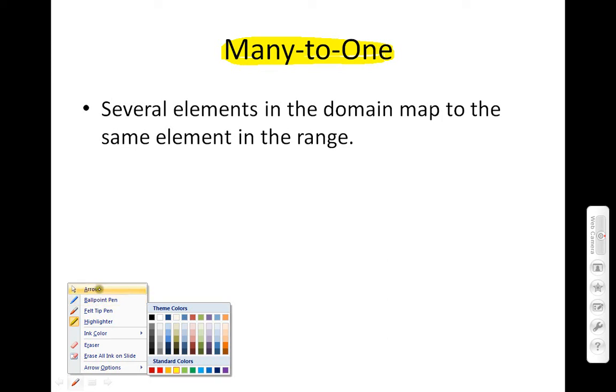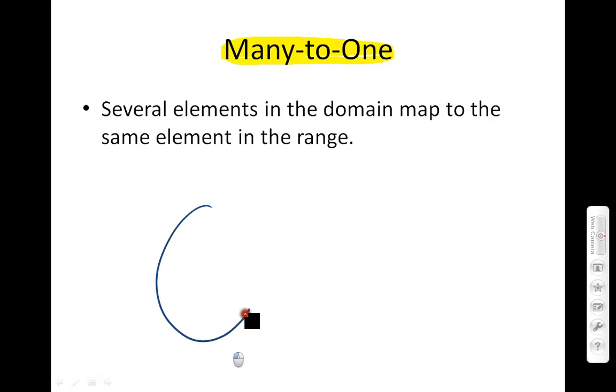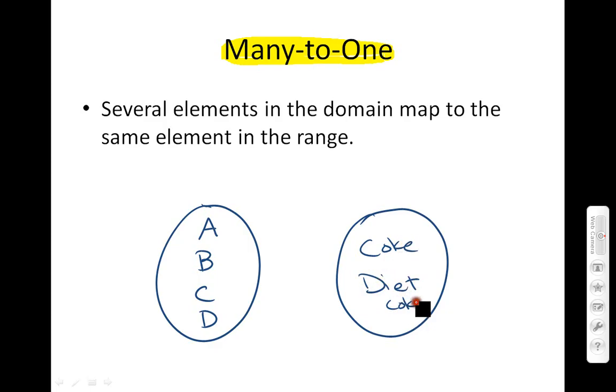So for example, if I had a Coke machine, I'm going to draw one in. If I have a Coke machine where A, B, C, D are my buttons, and let's say this Coke machine only sold Coke and Diet Coke, and button A gave you Coke and button B gave you Coke, that would be a many-to-one. Because two buttons give the same output Coke. And then here's another example for many-to-one. Because the two buttons, C and D, give you Diet Coke.